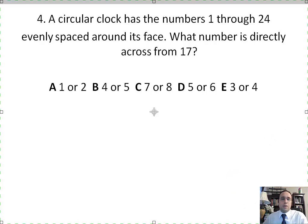Another typical question on the Bergen Academy's test. A circular clock, so it looks just like a regular clock, it's a circle, has the numbers 1 through 24.